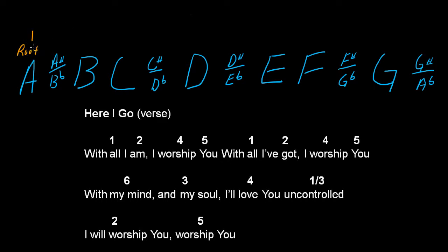Then you go: root, whole — that's two; whole — three; half — four; whole — five; whole — six; whole — seven; and half goes back to the root. If you're confused by this, that means you didn't watch the previous videos that talk about the major scale and how the major scale and the number system are correlated. Go back and watch those, and then you'll understand this.